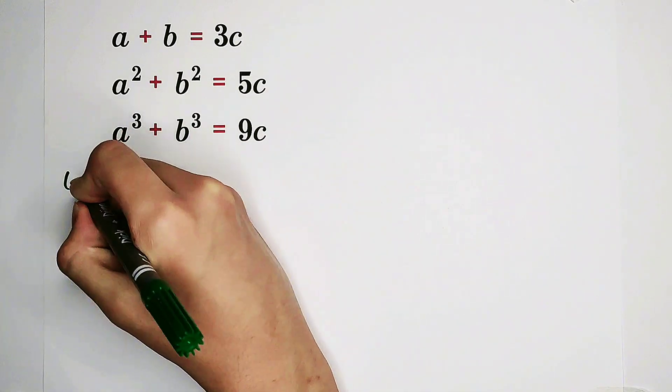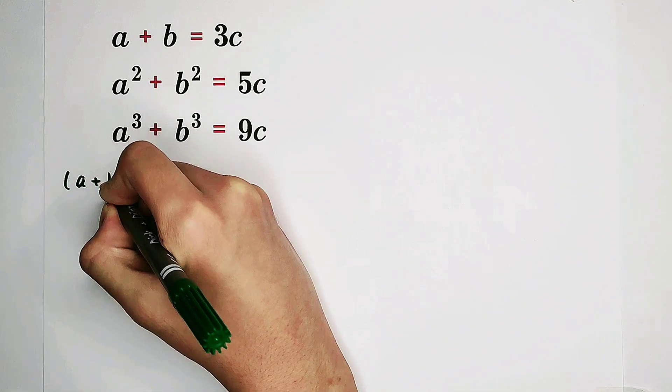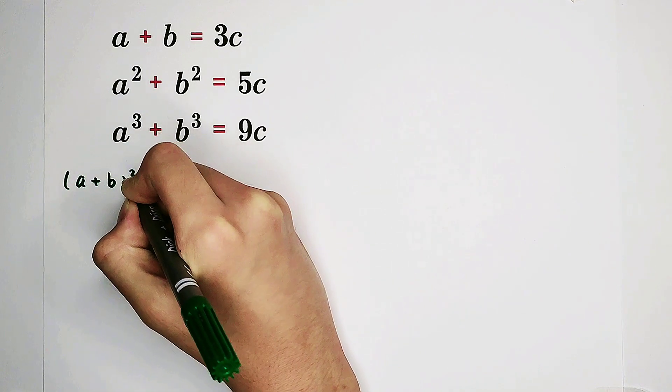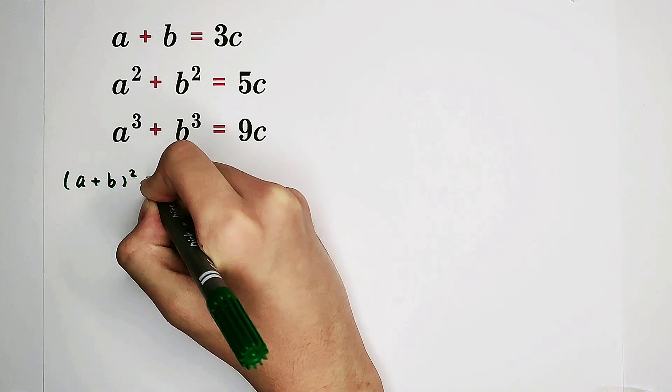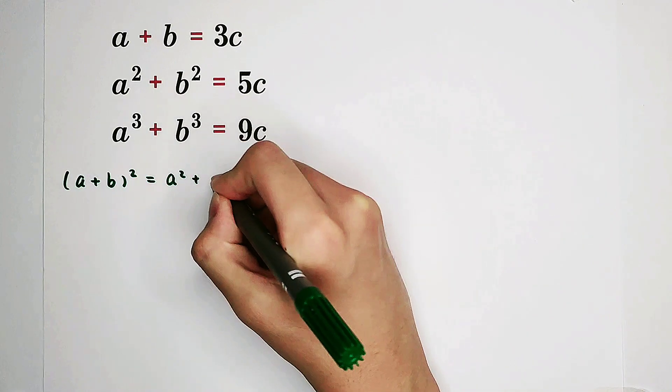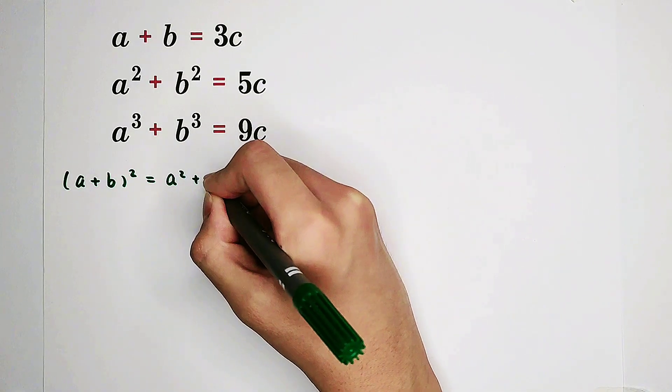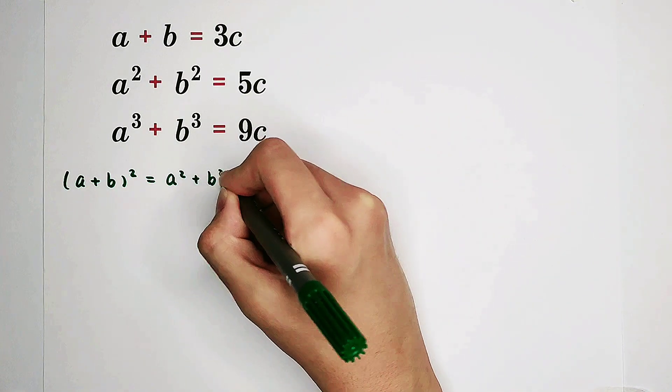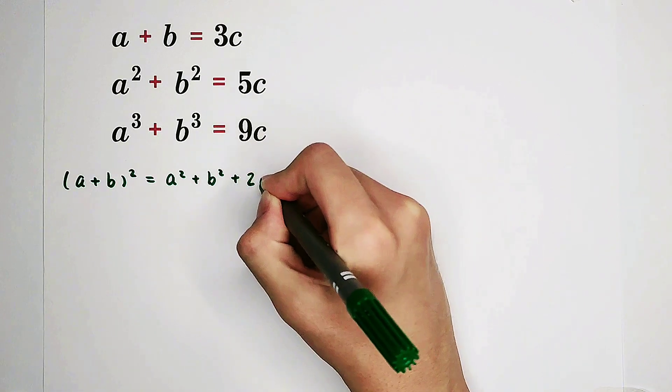Now, we have the binomial formula. a plus b all squared equals a squared plus 2ab, then plus b squared. Here, I'm gonna write b squared firstly, and then plus 2ab.